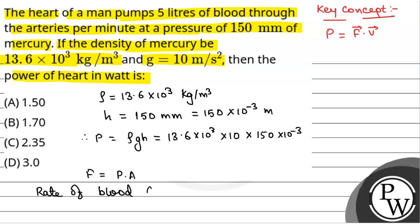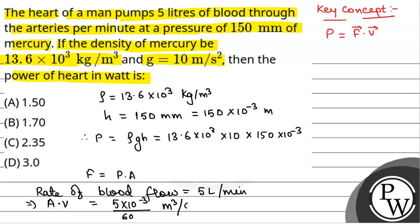Also we have the rate of blood flow. Rate of blood flow is given at 5 liters per minute, and we know that rate of blood flow equals A × v. So this will be A × v = 5 × 10⁻³ divided by 60 meter cubed per second. So we will find the power.